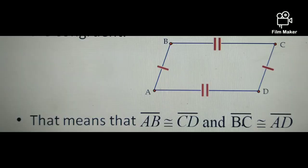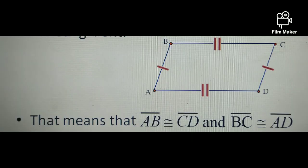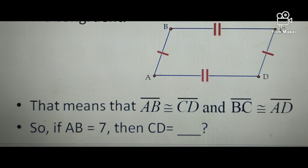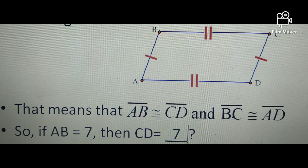So if this is your parallelogram, it means the measure of side AB is congruent to the measure of side CD. So if AB is equal to 7, then automatically its opposite side, which is CD, is also equal to 7 because they are congruent.